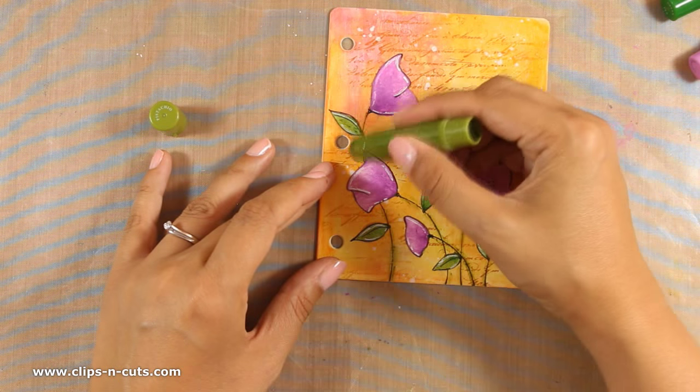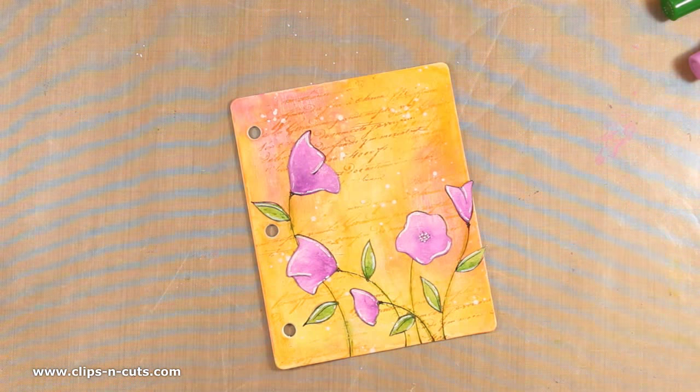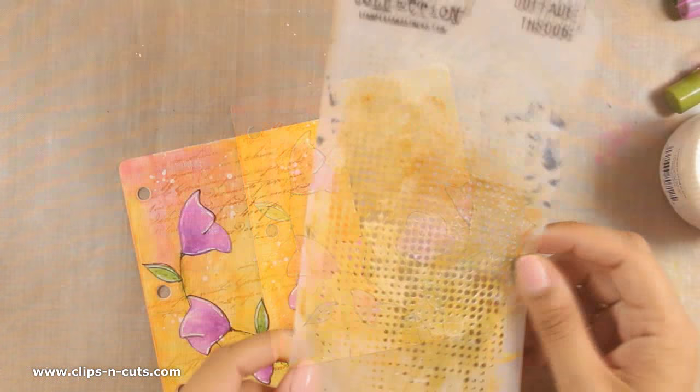You can always use a green marker to add some depth on the stems, but I decided to do all the coloring with gelatos today, so there you go.